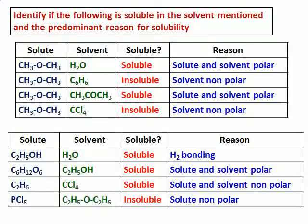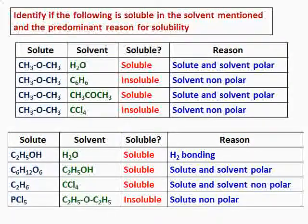The first solute given is CH3OCH3, ether, and the solvent is water. It will be soluble because both water and ether are polar. The next one — dissolving ether in benzene — it will be insoluble because the solvent is non-polar but the solute is polar.